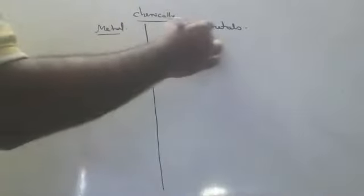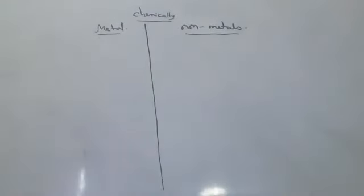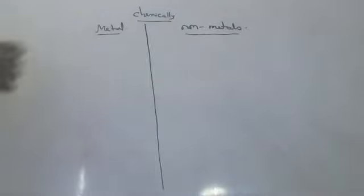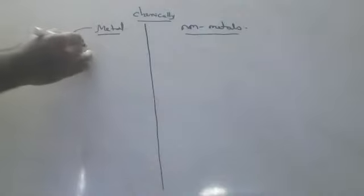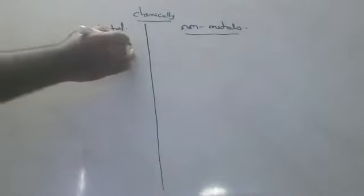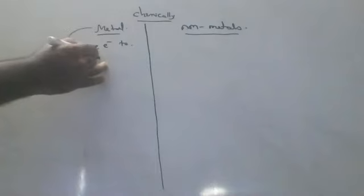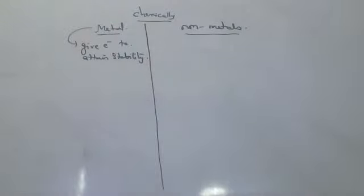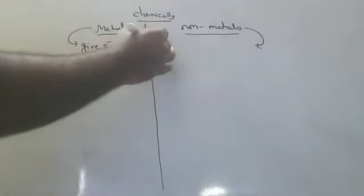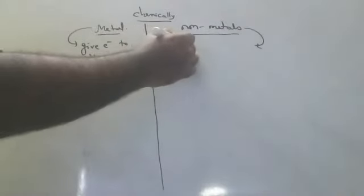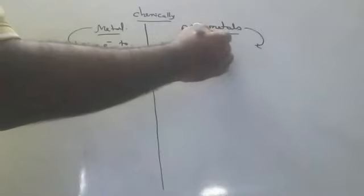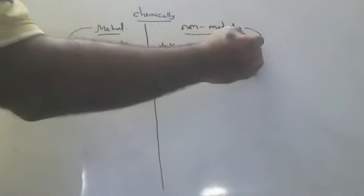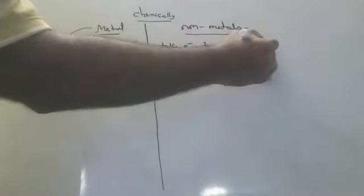This is very important and will come in all classes. Metals always give electrons — they give electrons to attain stability. Non-metals take electrons, also to attain stability. How they attain stability — through covalent bonds, ionic bonds — I will explain later. Because metals give electrons, they form positive ions called cations. Because non-metals take electrons, they form negative ions called anions.